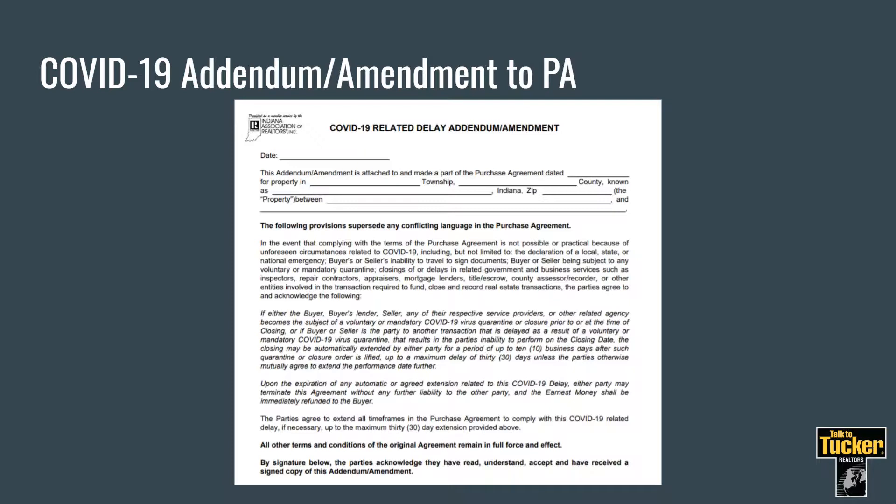This document is designed to serve the buyer and seller. It may seem a little vague — a lot of people have brought that up — but it's meant to address what if someone gets sick, what if a lender or title company has something that causes a delay making pushing things back necessary. Timeframes are set at basically 10 business days to a maximum of 30 days as an extension to the closing of a transaction, and anything beyond 30 days must be mutually agreed upon between buyer and seller.